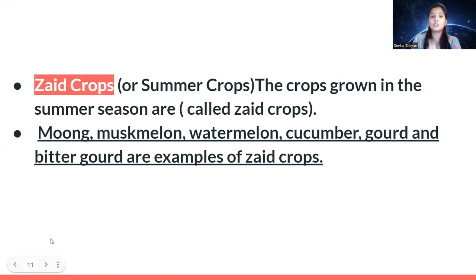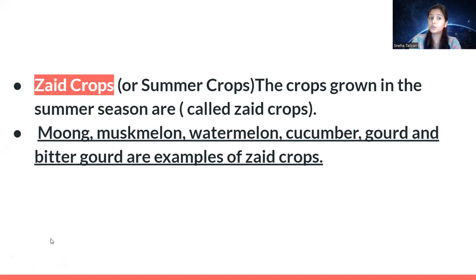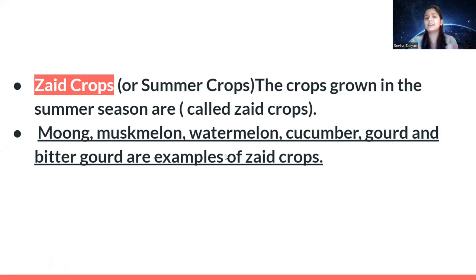There is a third category called Zaid crops, or the summer crops — the ones we get to eat in the summer season. These crops are grown in the summer season. Examples include muskmelon, watermelon, cucumber, gourd, and bitter gourd. These are all Zaid crops.